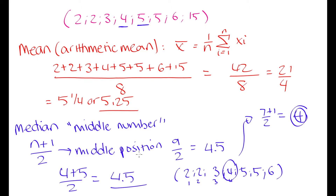The (n + 1) / 2 formula only gives you the position of your median — you must then count to that position to find the actual median number. For a small data set you can simply visualize which number has an equal count above and below it. But for a very large data set it is easier to calculate the position first and then count to find the median value.